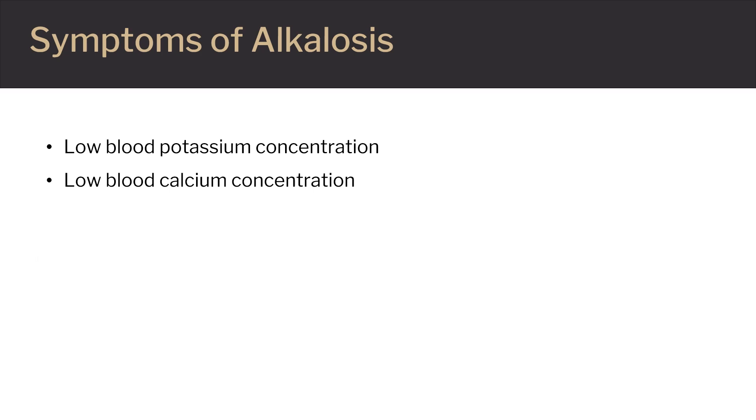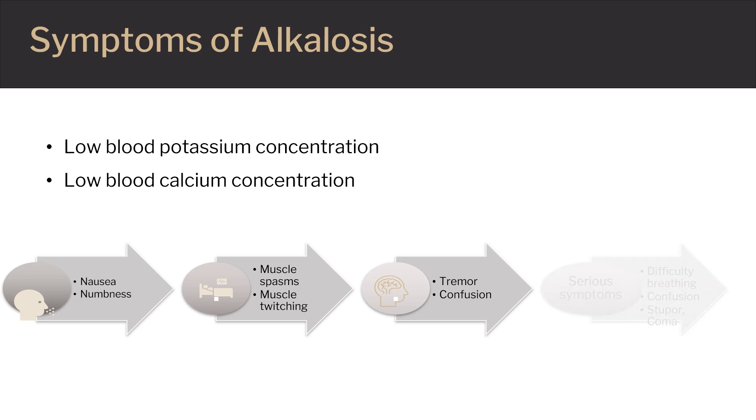Early symptoms: Symptoms of alkalosis can vary. In the early stages of the condition, you may have nausea, numbness, prolonged muscle spasms, muscle twitching, or hand tremors. Serious symptoms: If alkalosis isn't treated right away, severe symptoms can develop. These symptoms could lead to shock or coma, dizziness, difficulty breathing, confusion, stupor, or coma.